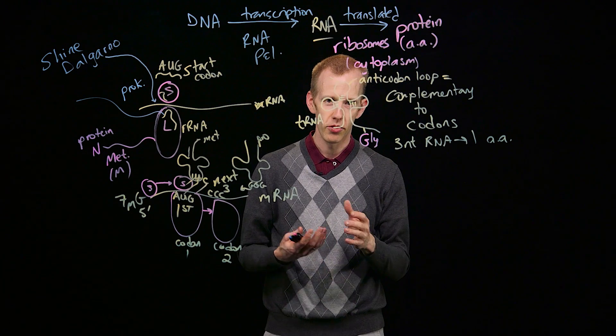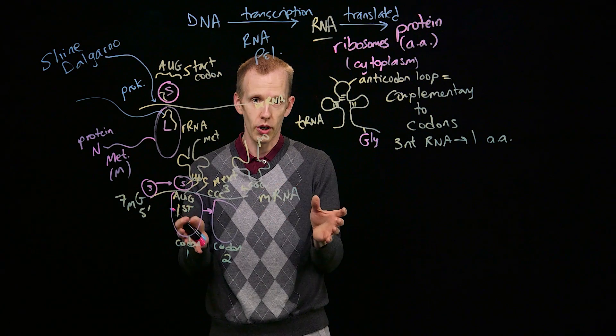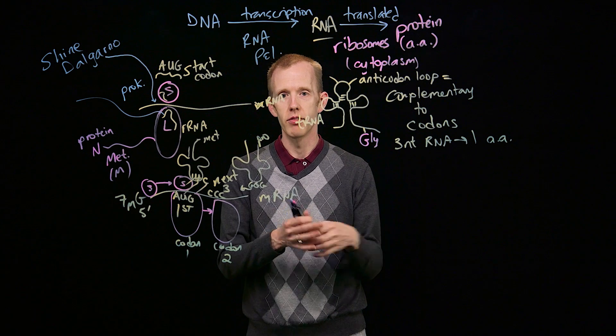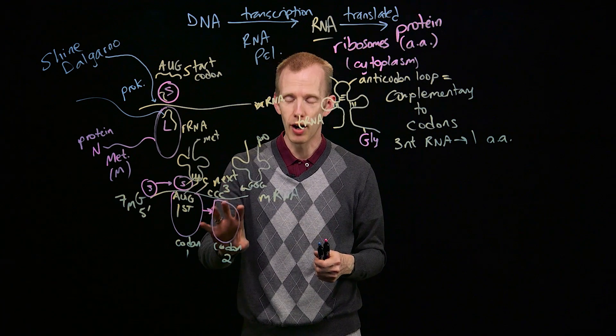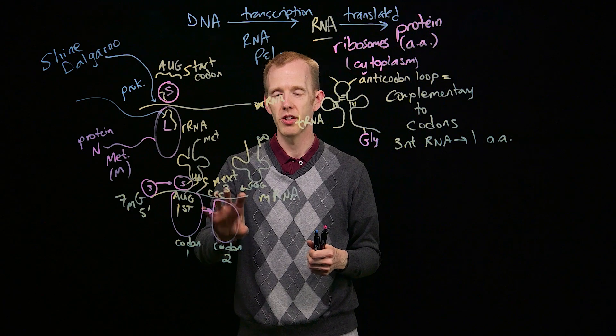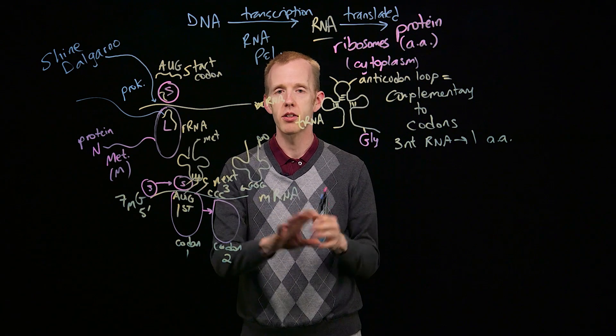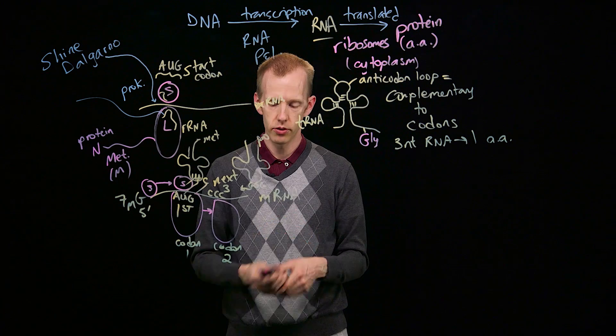Then we get to the process of elongation, that's what we're talking about right now. This process of the addition of new amino acids to the C-terminus of the growing chain of amino acids is basically the same in prokaryotes and eukaryotes.